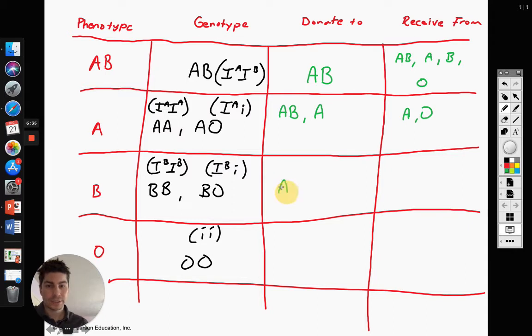B can donate to, once again, AB or B, and they can receive from B or O. They cannot receive from, same with A, A and B, they cannot receive from AB because the opposite carbohydrate. So for A, that B carbohydrate on AB would actually repel it.